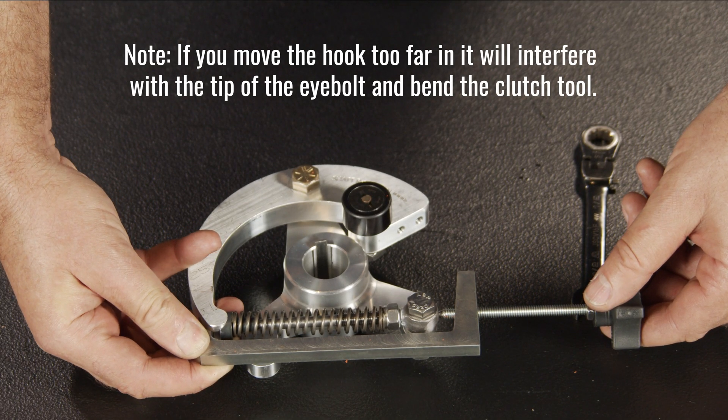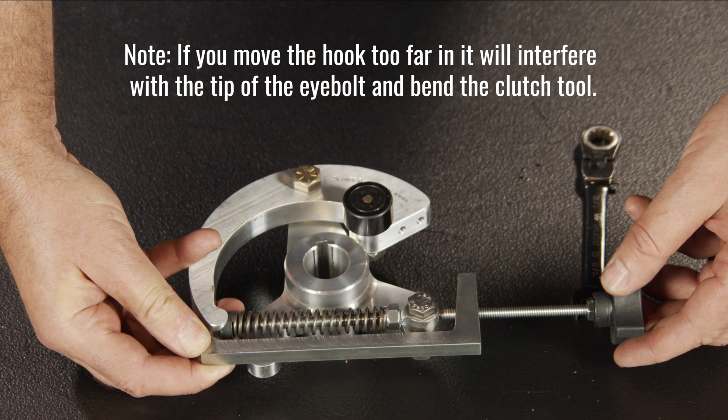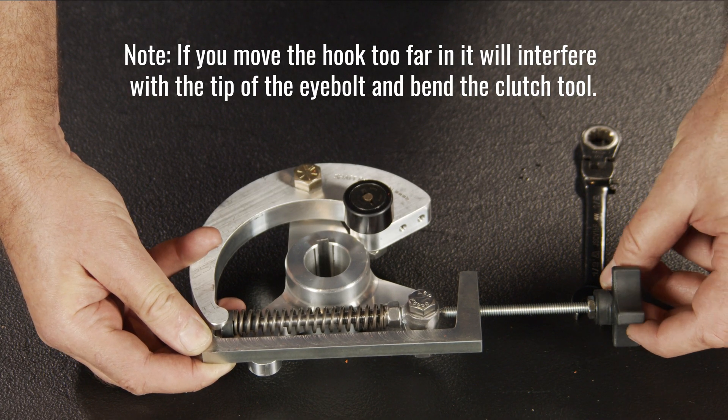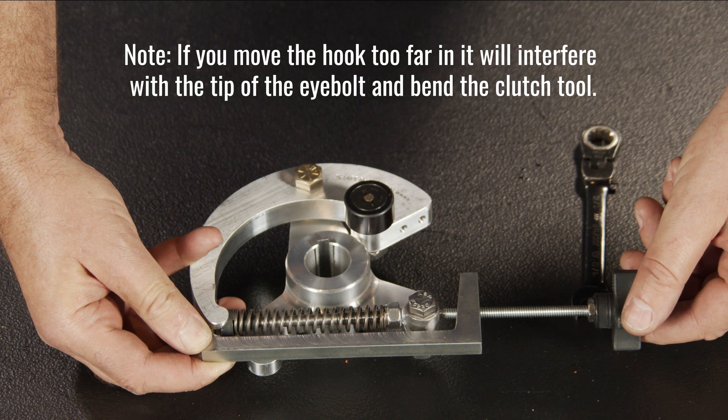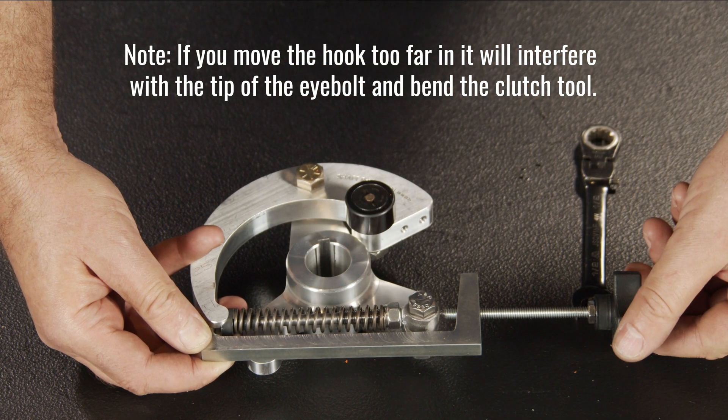Note that if you move the hook too far in, it will interfere with the tip of the eye bolt and bend the clutch tool. Rotate the clutch tool's knob until the hook pulls the spring retainer cup and the springs away from the clutch arm.